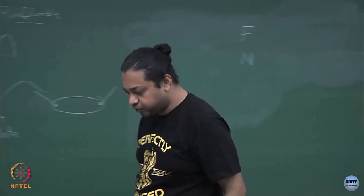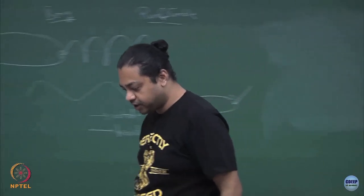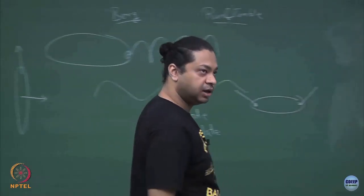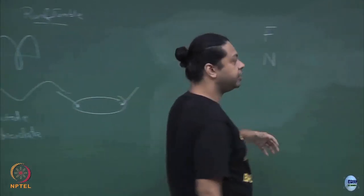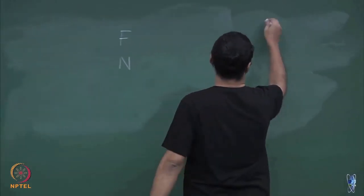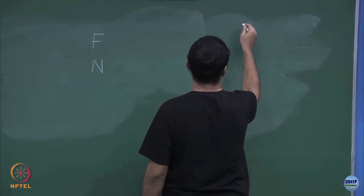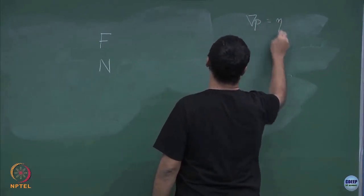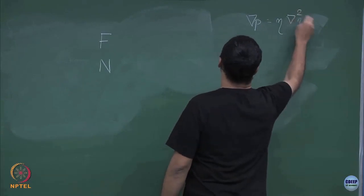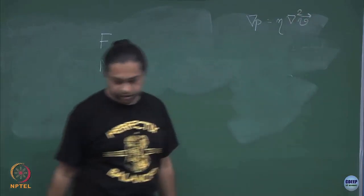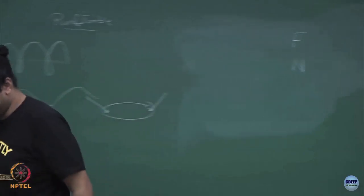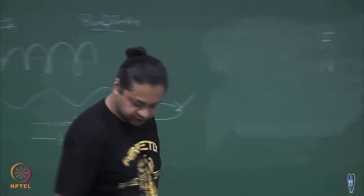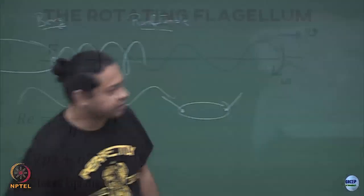How will the force depend on the velocity — linearly or non-linearly? Linearly, because this is the low Reynolds number regime. The governing equation is now the Stokes equation, which is that the pressure gradient equals eta times the Laplacian of v — a linear equation — and you will get a linear force-velocity relationship in this regime.